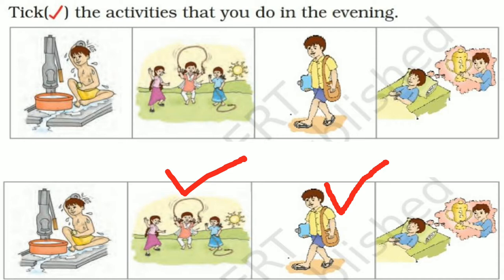In the fourth picture, a boy is dreaming — he has slept and is dreaming. When do we sleep, children? I sleep at night, so I did not tick the evening picture. Children, you have to tick the activities according to your own daily routine.